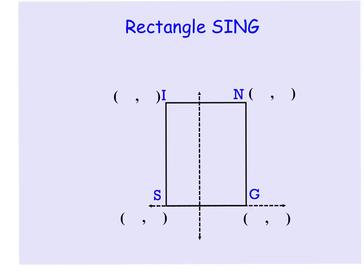In rectangle SING, they don't give us any points to work from, so that means we're just going to make some up. So we'll just start over here with G, and I'm going to say that the distance from here out to here is A, which makes this ordered pair A zero.